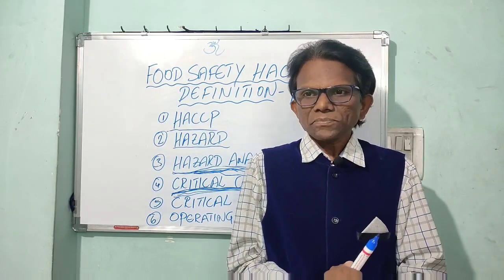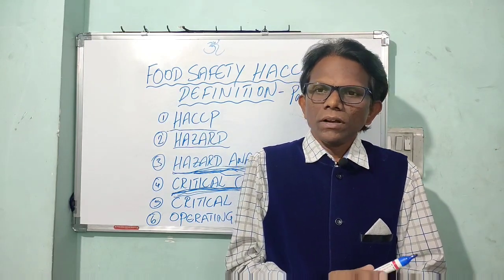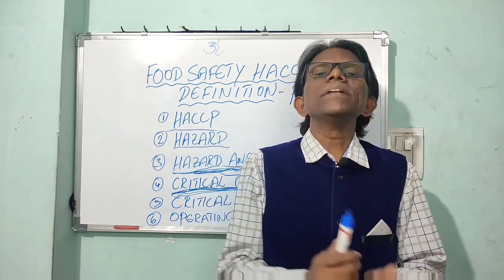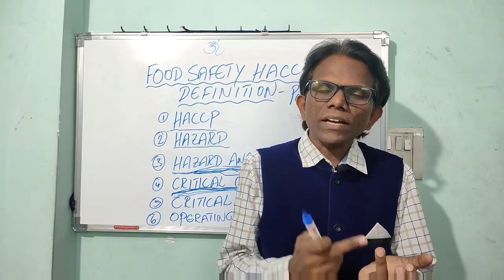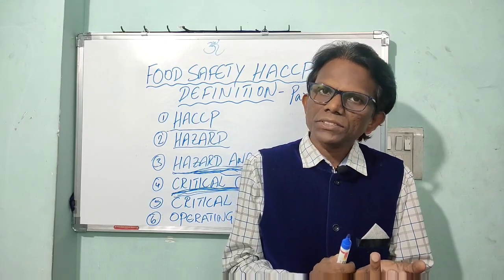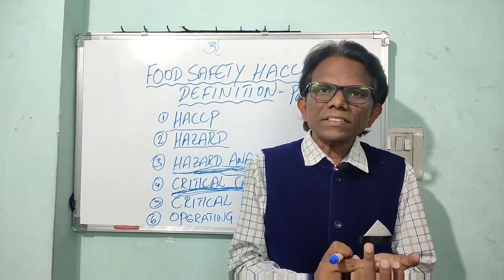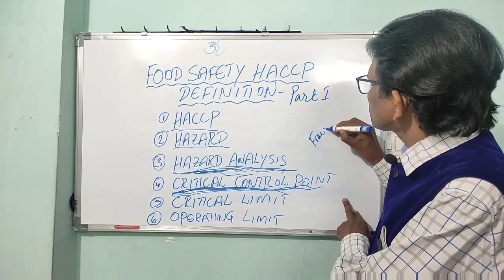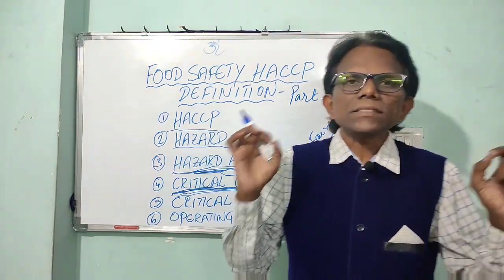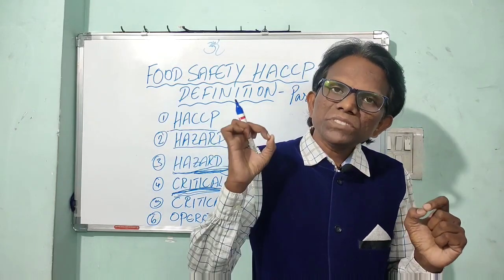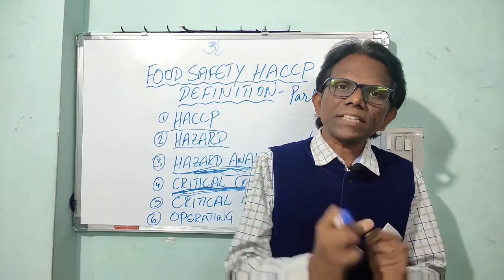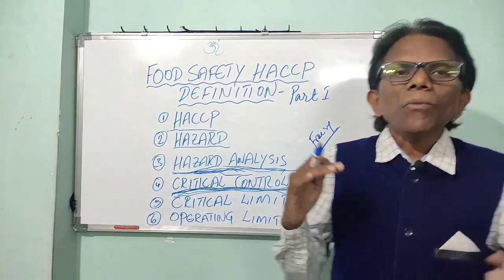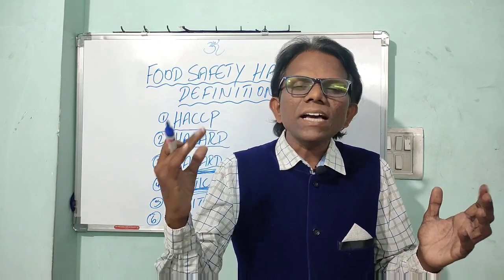The next one is hazard elimination. A good example of elimination of hazards is the killing of parasites. The process of freezing is the step which eliminates the significant hazard of parasites. This is a good example of elimination.